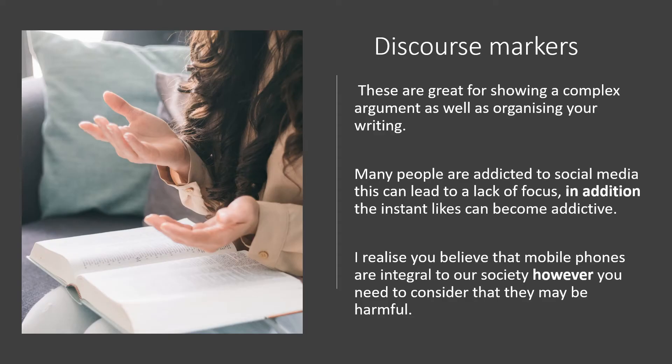First one is D — that stands for discourse markers. These are really good for adding that complex element to your writing, and all they are is big connectives, those big kind of posh connectives that we see. So if we see my example here: 'Many people are addicted to social media. This can lead to a lack of focus. In addition, their instant likes can become addictive.' Very similar to your connectives — be sure to check out our connectives video. 'In addition' just builds upon your point — we call that an integrated discourse marker, and that's actually at the A-star range for GCSE English Language.